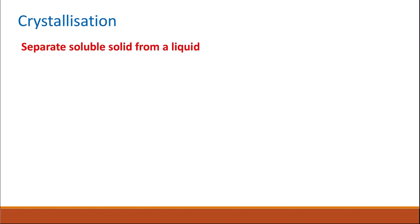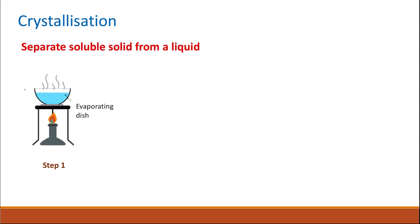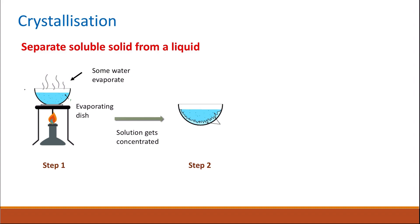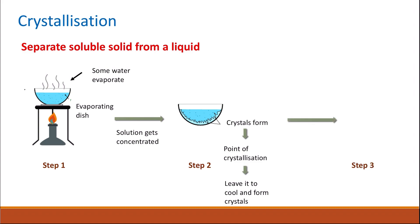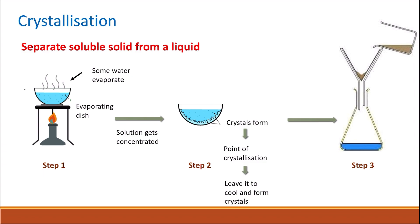You can also separate a soluble solid from a liquid using crystallization. In crystallization, there are several steps. In the first step, you heat your mixture in the evaporating dish, but only to allow some of the solvent or water to evaporate so the solution becomes concentrated. You keep heating until you start to see crystals formed on the sides of the evaporating dish — this is called the point of crystallization. You then take it off the heat and leave it to cool, and more crystals will form. Once the crystals are completely formed, step three is simple filtration, where you separate the crystals as a residue on the filter paper, while the filtrate contains mainly the solvent.